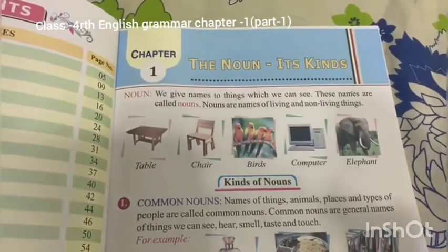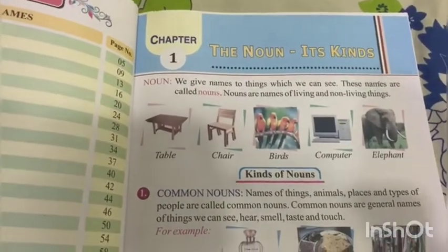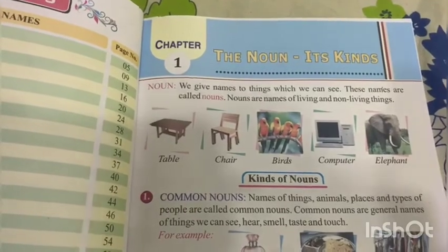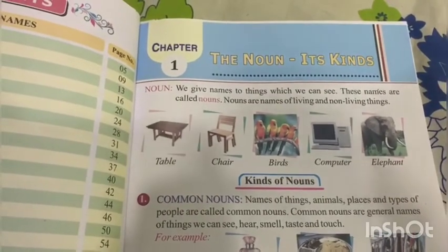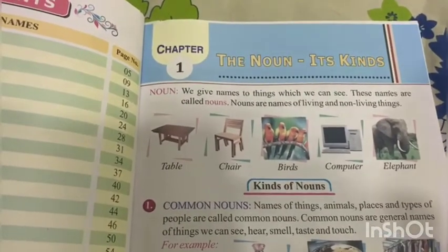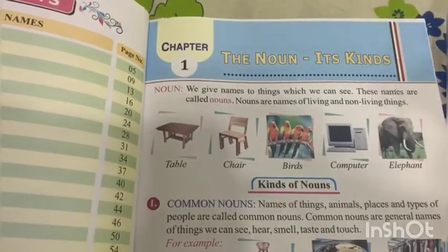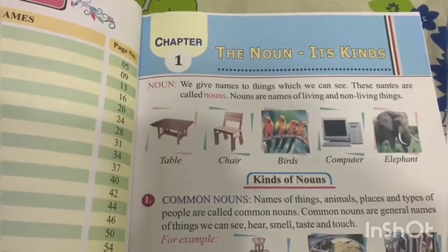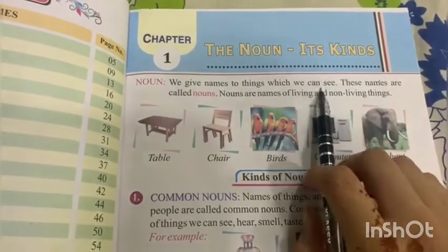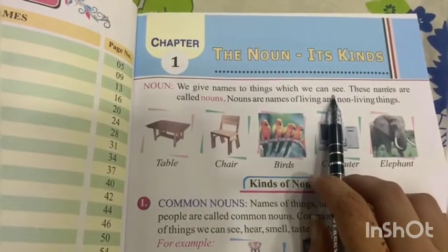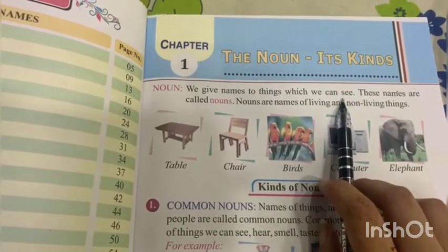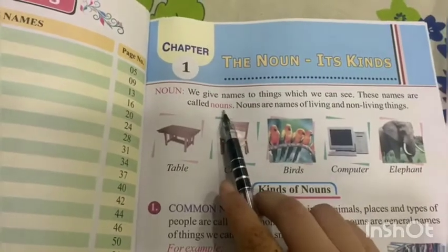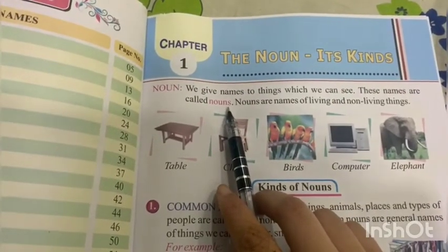Good morning students. Today we are going to start English grammar chapter number one, that is the noun and its kinds. So first of all, what is a noun? We gave names to things which we can see. These names are called nouns.